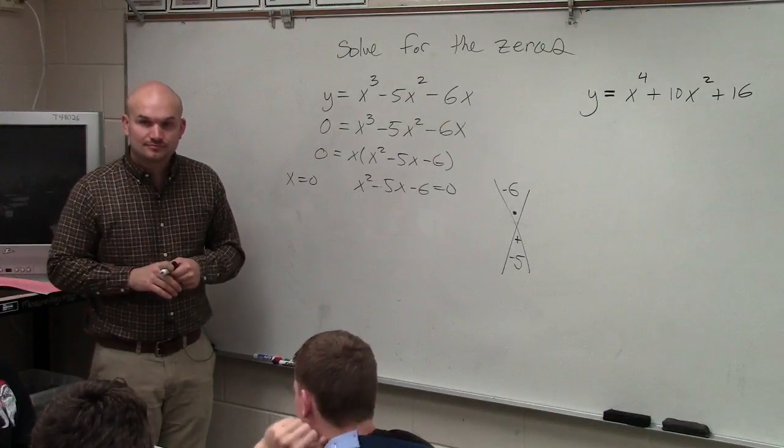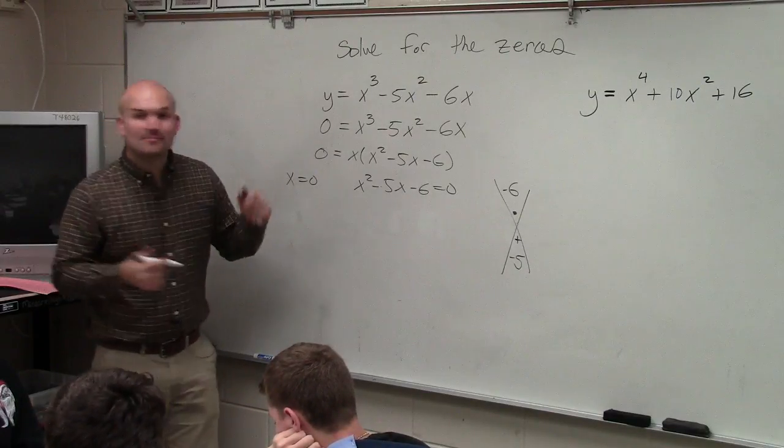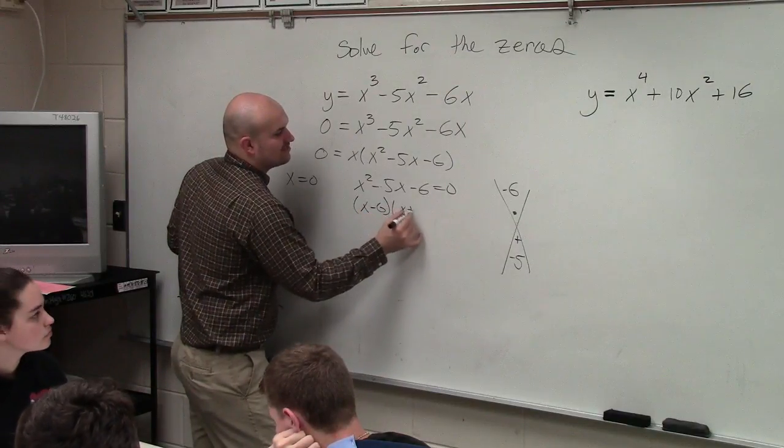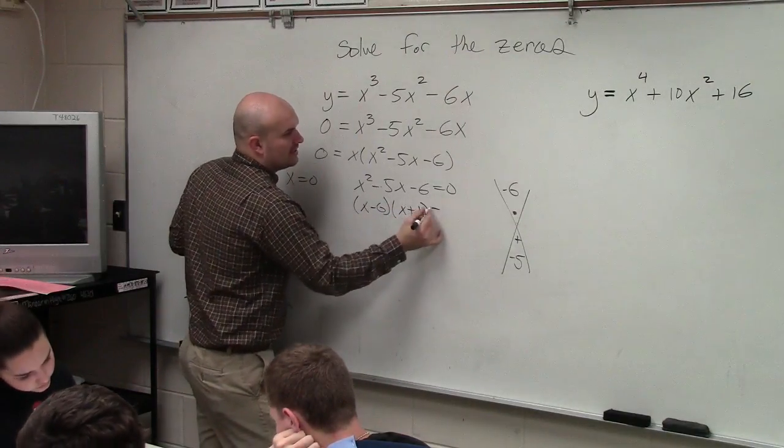Yes, Jess? Negative 6 and 1. Negative 6 and positive 1. So I do x minus 6 times x plus 1 equals 0.